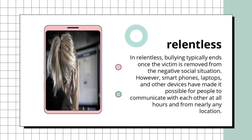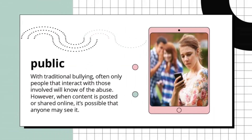Number two: relentless. In-person bullying typically ends once the victim is removed from the negative social situation. However, smartphones, laptops, and other devices have made it possible for people to communicate at all hours and from nearly any location. Cyber bullies may be able to torment their victim 24 hours per day, seven days per week, making it difficult for the victim to escape by going home or even changing schools.